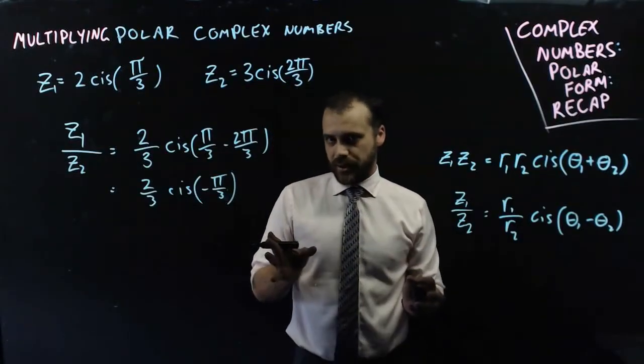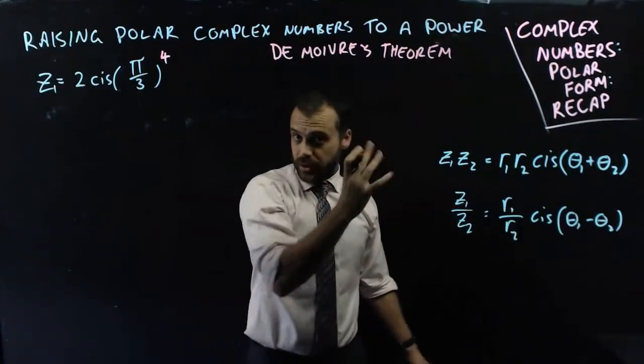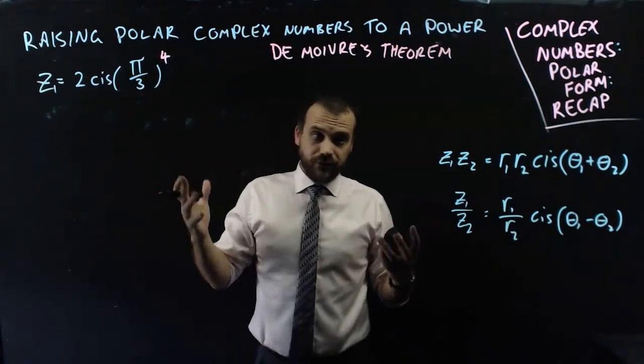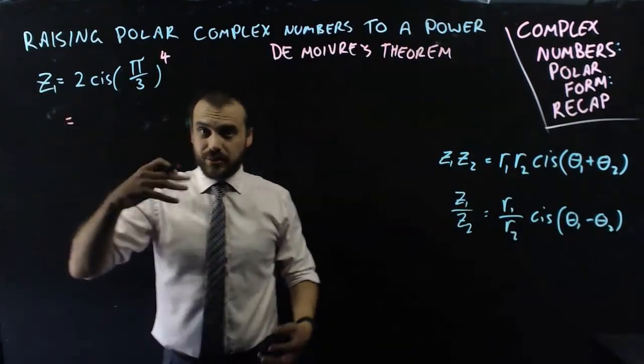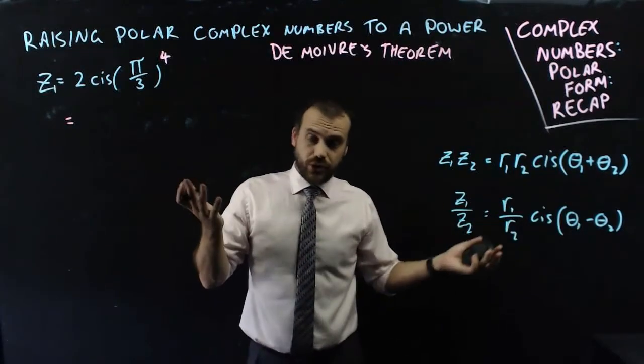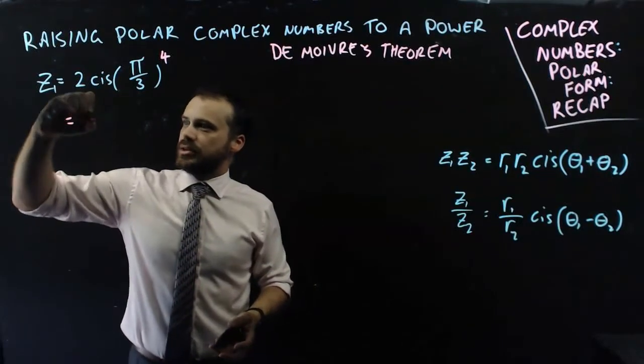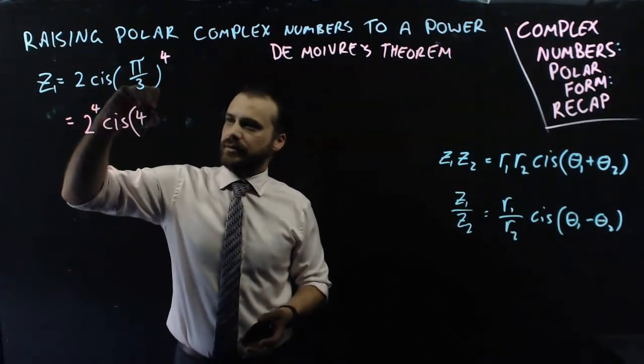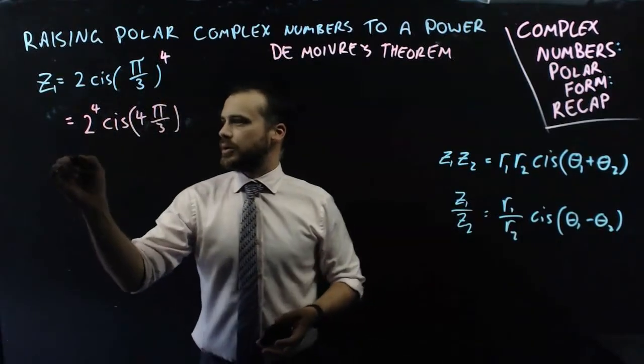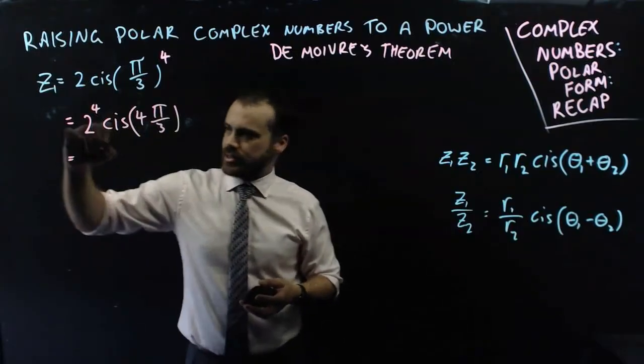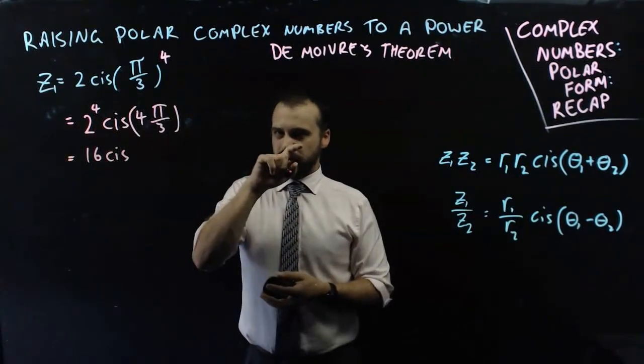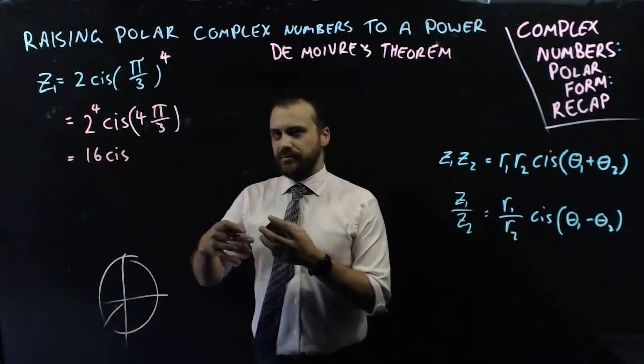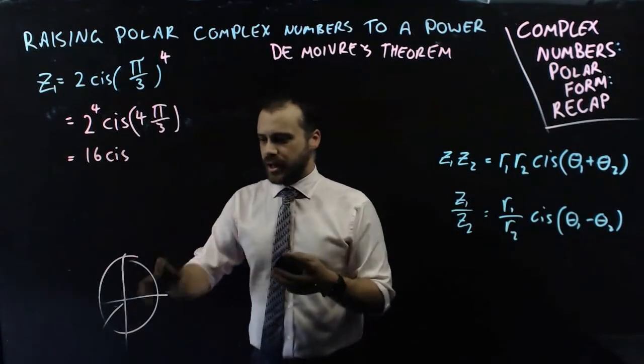Lastly, we're going to look at powers. So raising polar complex numbers to a power. De Moivre's theorem. I don't know how to say that. z1 equals 2 cis pi on 3 to the power of 4. To the power of 4 is just repeated multiplication. So it works the same. You could work this out just by doing this 4 times. Or we can do it faster. It's going to be this to the power of this. Cis, this times that. Okay, and tidying this up a little bit. 2 to the 4 is 2, 4, 8, 16. Cis, 4 pi on 3. Now 4 pi on 3 is like over here. But it's not very polite to express a polar complex number as 4 pi on 3. So we should express it this way instead as negative 2 pi on 3.